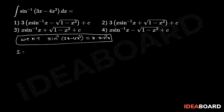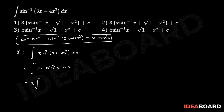So I equals integration of sin inverse of (3x minus 4x cube) dx, which equals integration of 3 into sin inverse of x dx. That equals 3 into integration of sin inverse of x into 1 dx.